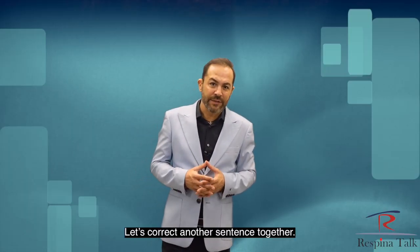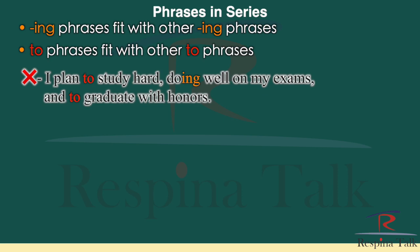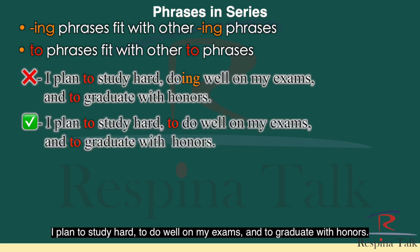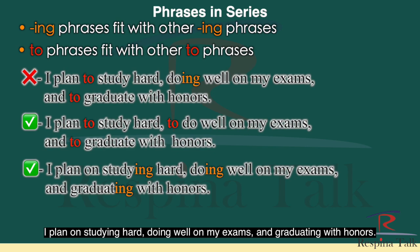Let's correct another sentence together. "I plan to study hard, doing well on my exams, and to graduate with honors." The corrected version: "I plan to study hard, to do well on my exams, and to graduate with honors." You could also use the ING form: "I plan on studying hard, doing well on my exams, and graduating with honors."